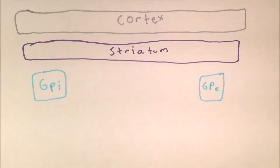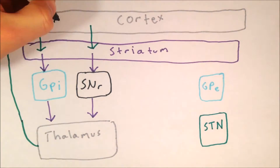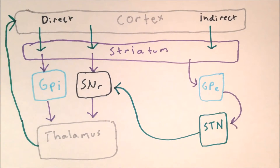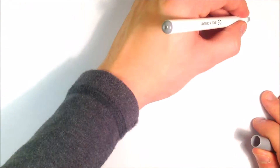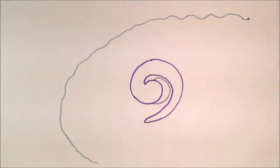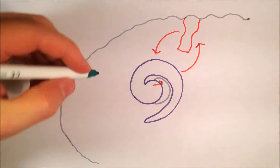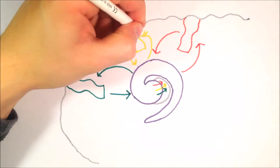In the previous video we had an introduction to the basal ganglia. We saw the classic direct and indirect pathways model and how it has been successfully applied to movement disorders. It's now believed that there are multiple parallel loops running through the basal ganglia originating from many different areas of the cortex.